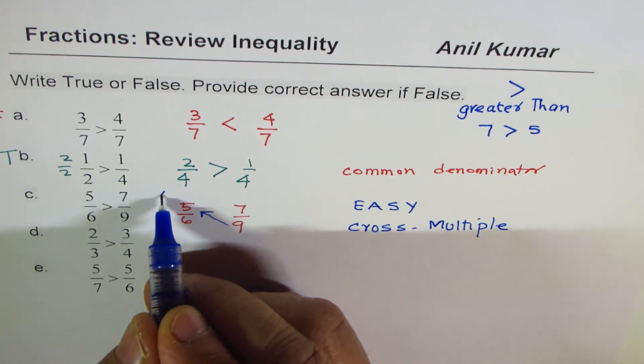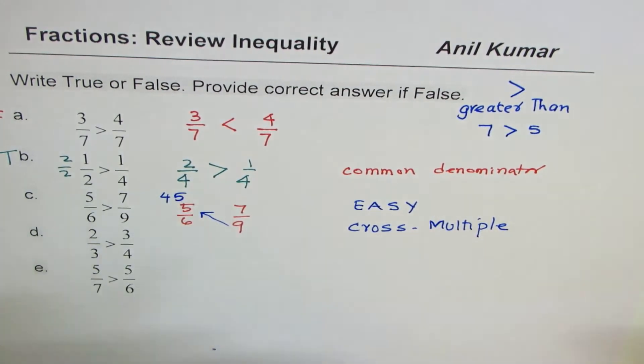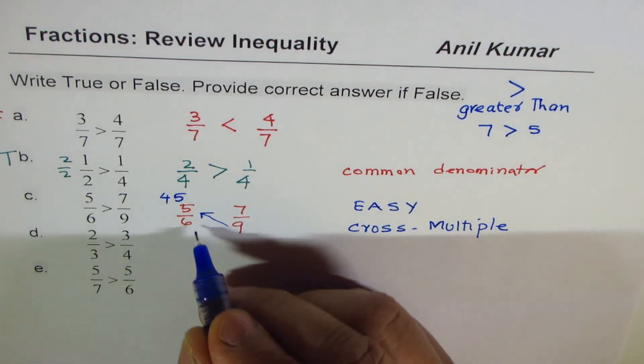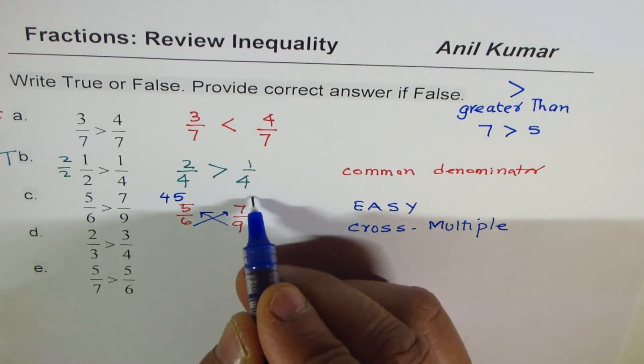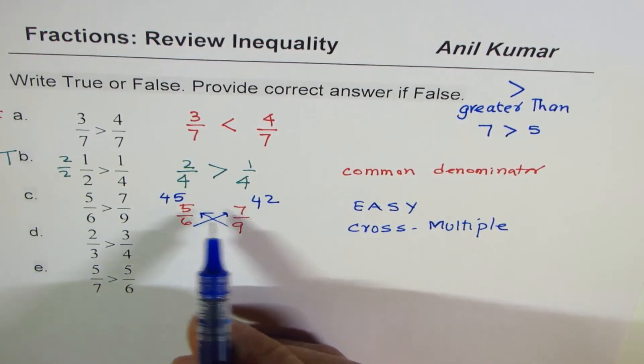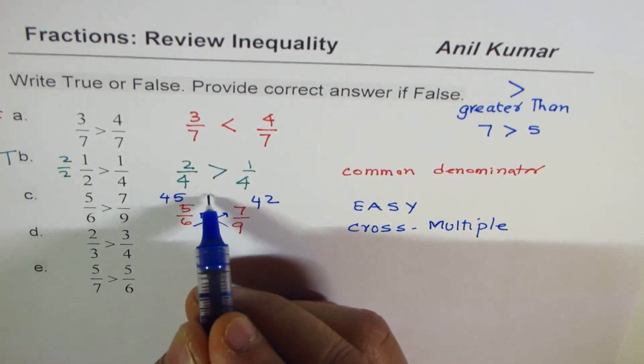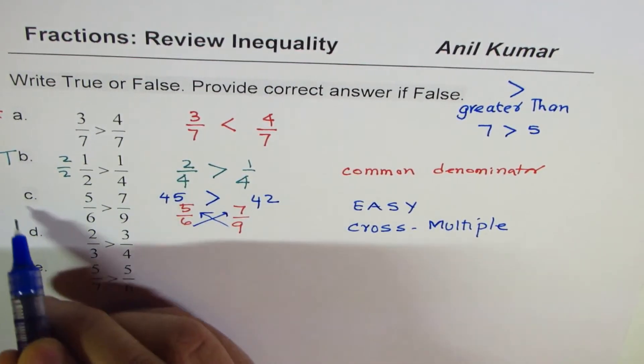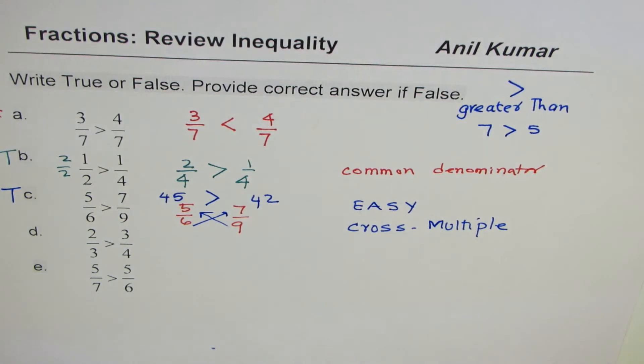So we'll cross multiply. We'll multiply 9 with 5, we get 45 here. And then we'll multiply 6 by 7, we get 42. Now you decide which is greater. We know 45 is greater than 42. That is what is given, so it is true. You get an idea? So this is the best way of answering such questions.